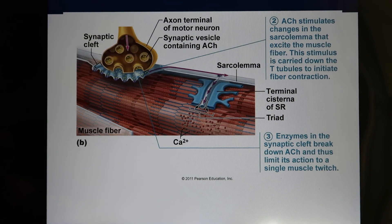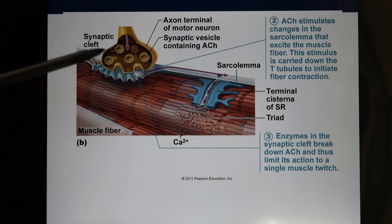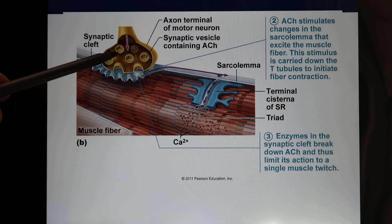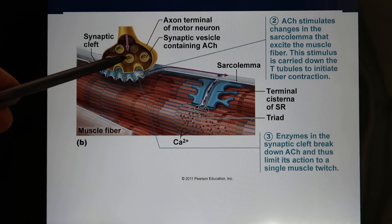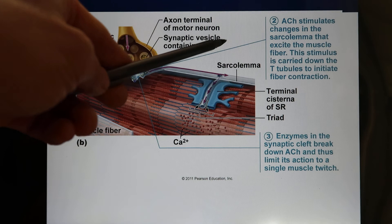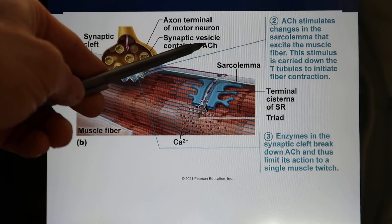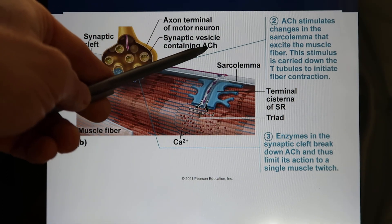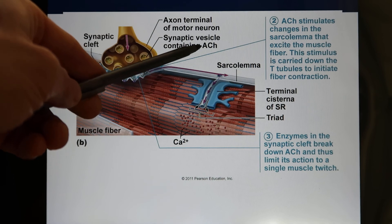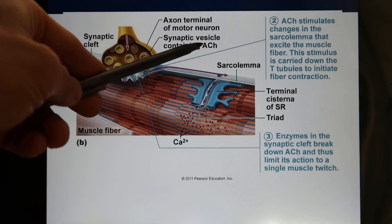The signal actually comes from neurons. Your brain decides which muscle to move, so the signal comes from the neuron. The neuron releases a neurotransmitter — the neurotransmitter released by the motor neuron that controls muscle is acetylcholine, spelled A-C-E-T-Y-L-C-H-O-L-I-N-E.